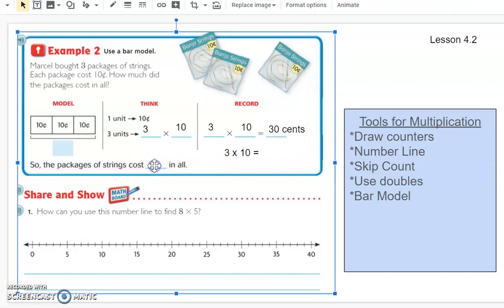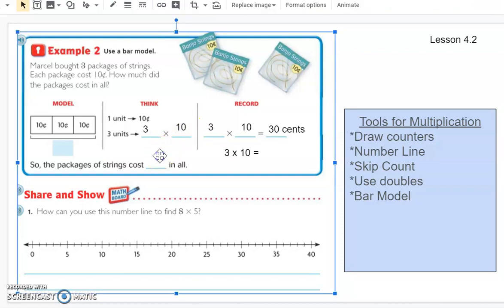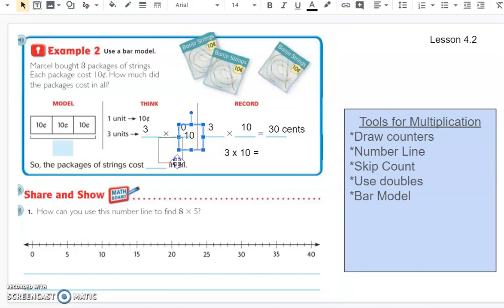And so we have to make sure that we're labeling that. And it's important to do that. Let's see if I can stretch this out and make it a little bit bigger. And then we have, so each of them cost 30 cents, or total 30 cents. So we know we have 30 cents in all for him to have all that string.